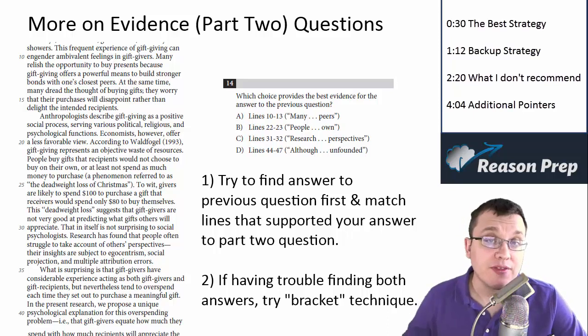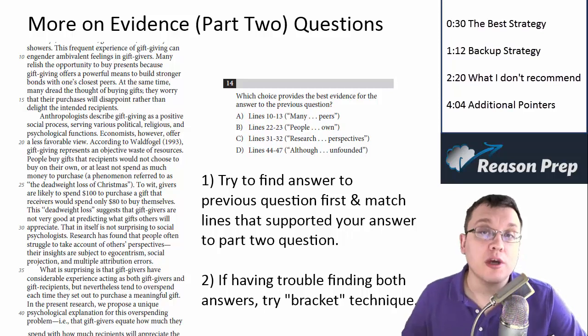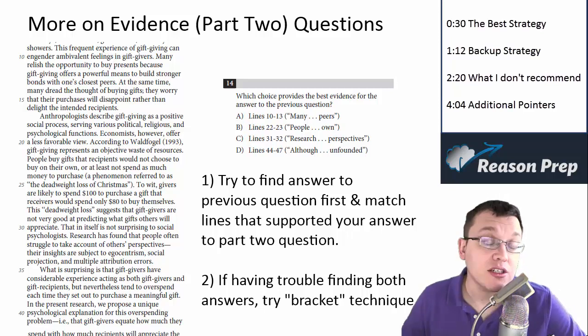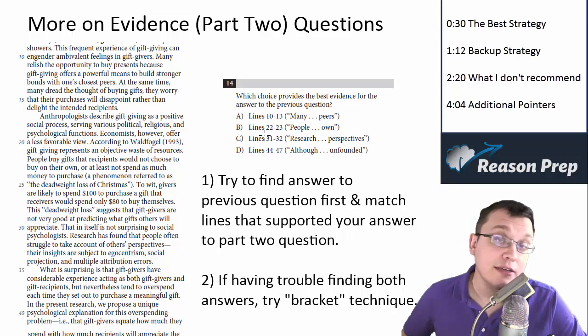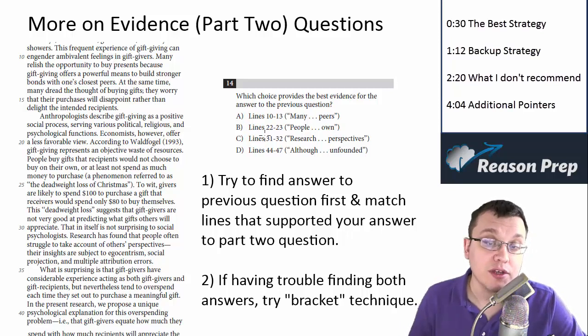One of the major new question types that the new SAT has introduced is the two-part or evidence questions. In the first question, you'll have to answer something about the passage. Sometimes it has a line reference, but often it doesn't - you just have to find the portion of the passage that gives you the answer. Then the follow-up question asks which choice provides the best evidence for the answer to the previous question, and you've got some lines to see which one best supports your answer.